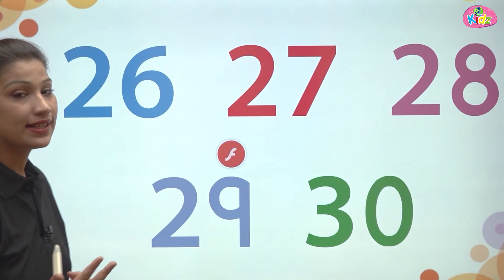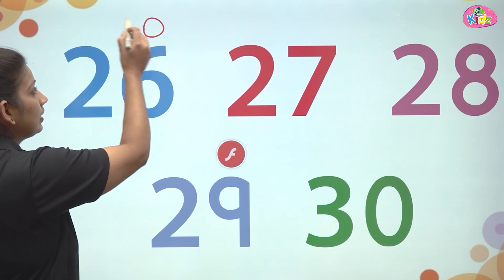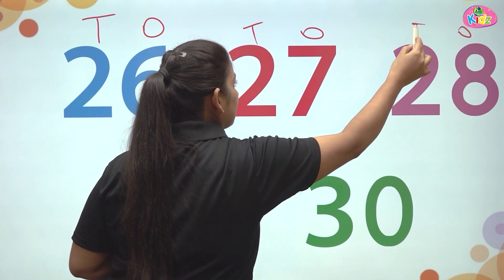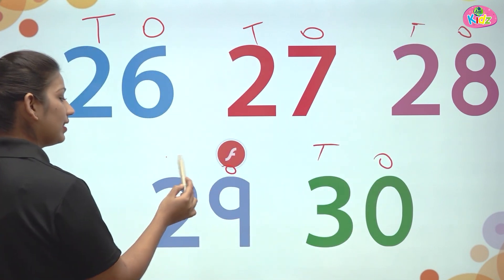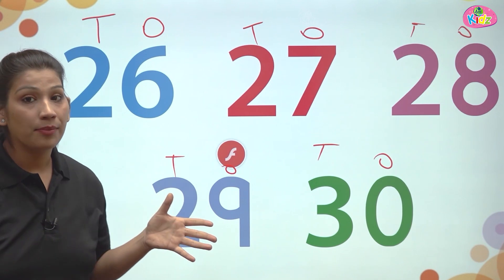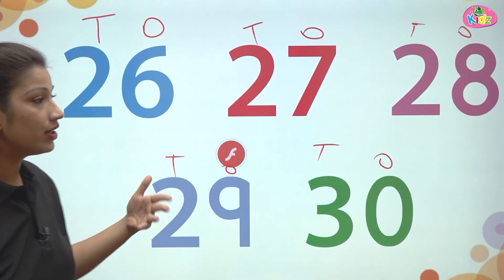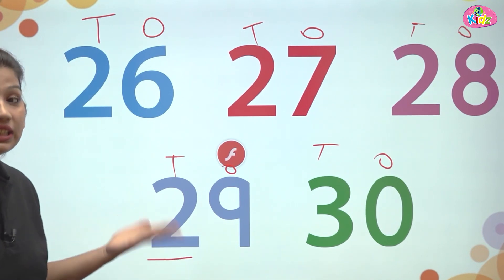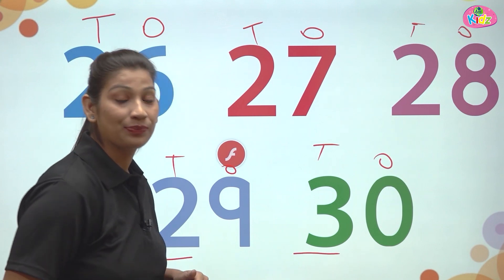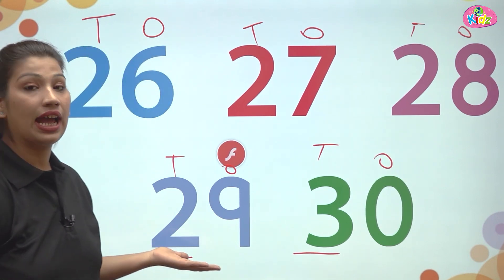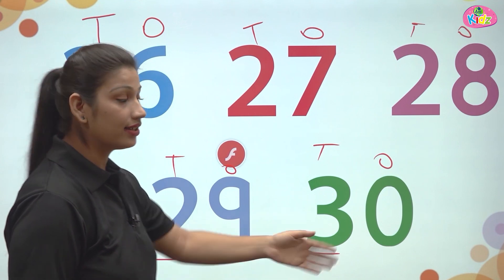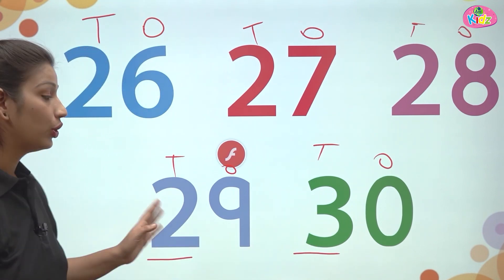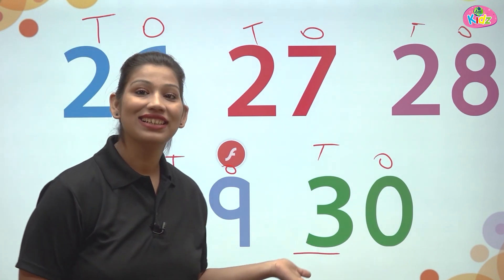Two-digit numbers have two places: one's position and ten's position. In numbers 26, 27, 28, and 29, you can see 2 at the ten's position. But in 30, at the ten's position we can see 3. After nine we write zero, and at the ten's place we write one number forward from two, which is three.